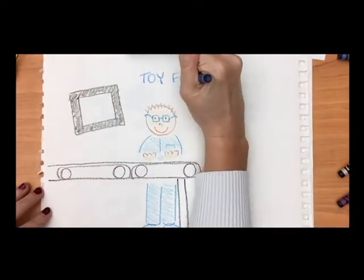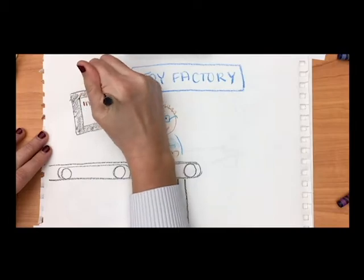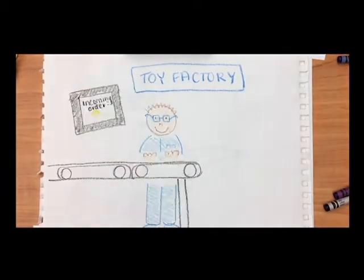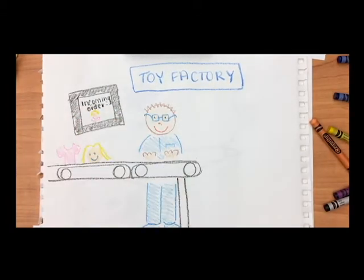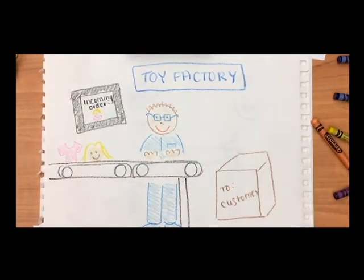Think of our immune system as a toy factory. When a new order comes in, the worker must gather all the required pieces for that toy and assemble it. Only after all the pieces are together do you have a complete toy to be shipped out to the customer.